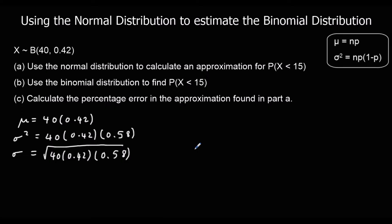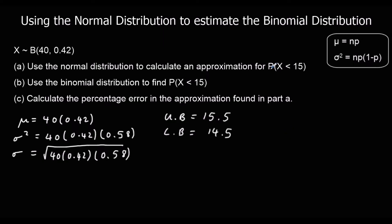We also need to bear in mind that the normal distribution is continuous and the binomial distribution is discrete, so we need to make a continuity correction. That means we're using bounds — for the value 15, the upper bound is 15.5 and the lower bound is 14.5, so 15 goes all the way from 14.5 up to 15.5. When we're looking at the probability of less than 15, we want less than 14.5.